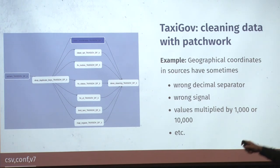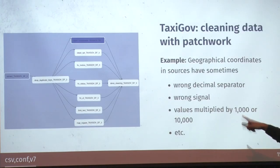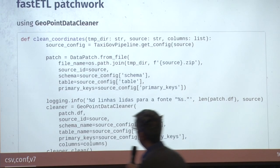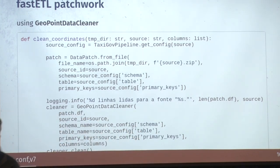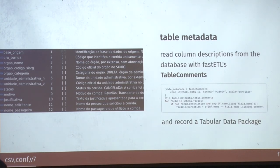Here's an example of the cleaning part. For geographic coordinates, we handle issues like wrong decimal separators for latitude and longitude, wrong sign, or values multiplied by arbitrary numbers like 1,000 or 100,000. Other fields like status and motive are also cleaned. This is the actual code for calling the FastETL patchwork to clean geographic coordinates: we read from a file into a data frame, pass the source, schema name, and parameter keys indicating which columns have geographic coordinates, and it does all the cleaning.